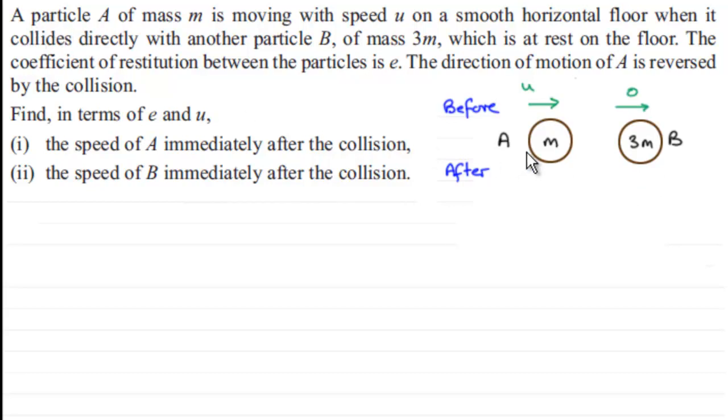What we've got is a particle A of mass m is moving with speed u on a smooth horizontal floor when it collides directly with another particle B of mass 3m, which is at rest on the floor. And the coefficient of restitution between the particles is e, and the direction of motion of A is reversed by the collision. And what we've got to do is find in terms of e and u the speed of A immediately after the collision, and the speed of B immediately after the collision.